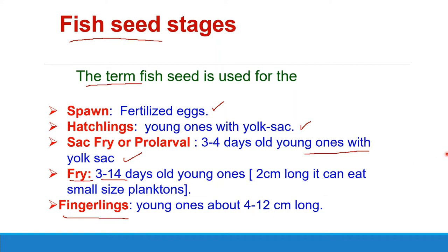Fish seed is a broad term used for all these stages. In simple words, they are the baby fishes used for seeding new culture ponds in fishery. In some books, it is also termed as spawn, meaning all these stages are spawn.